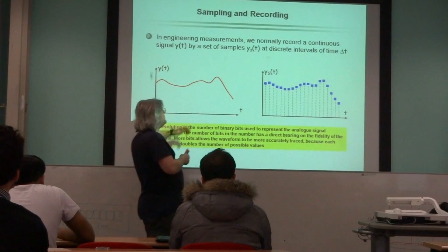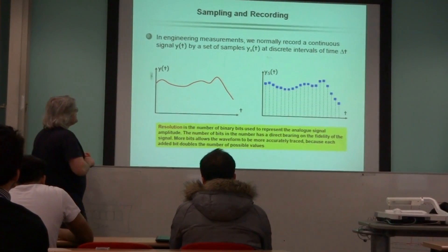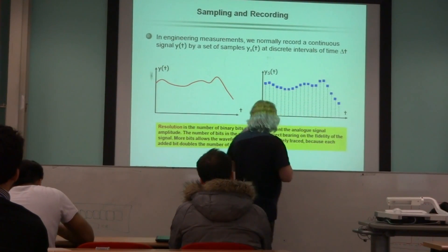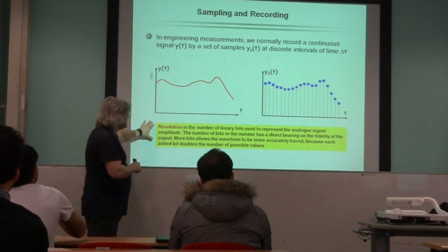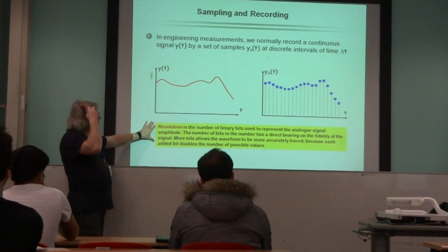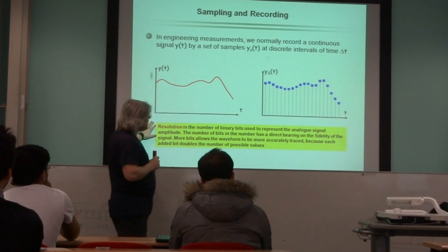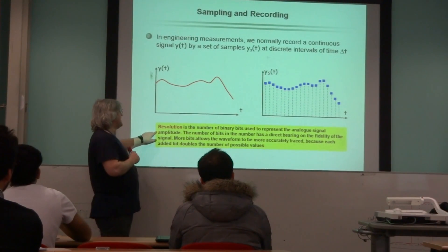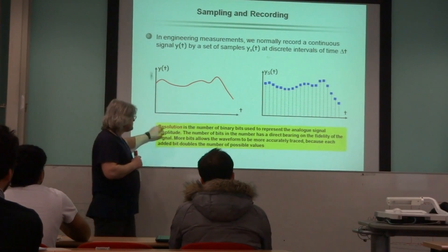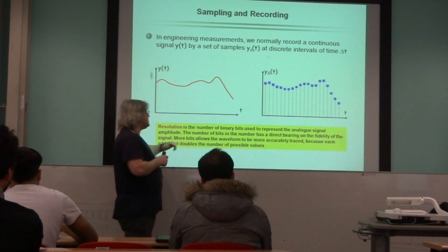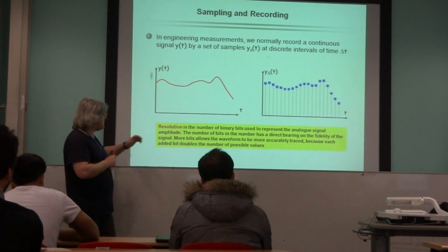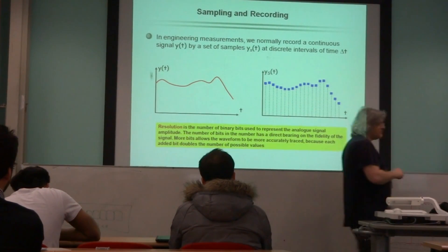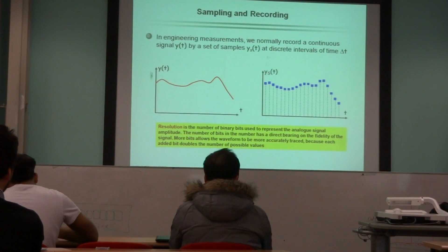So, in terms of a digital system, what we can do is represent the analog signal as a series of digital samples of that signal, and here's the definition that you'd be expected to know of resolution. It's the number of binary bits used to represent an analog signal amplitude, the magnitude of it. The number of bits which are used to represent that signal has a direct bearing on its fidelity, the accuracy with which we can reproduce it, and I'll show you that in subsequent slides.